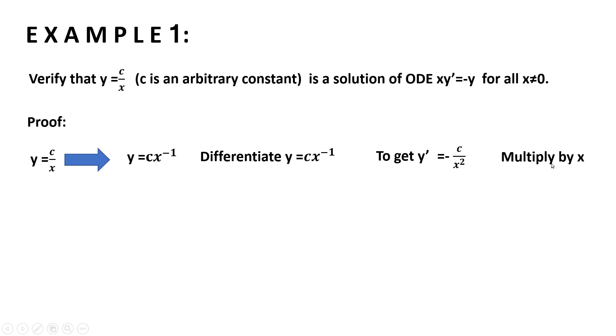Now multiply by x. We get xy' equals minus c over x. We know that c over x equals y, so replace c over x with y. It becomes xy' equals minus y, which is the given ordinary differential equation. That is the proof.